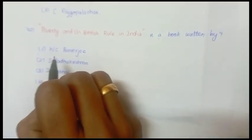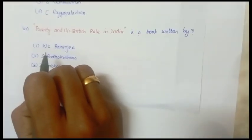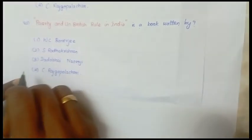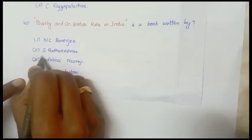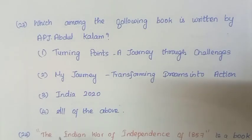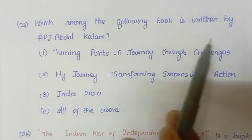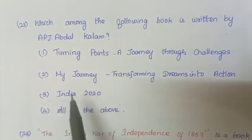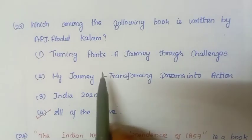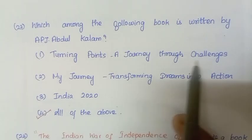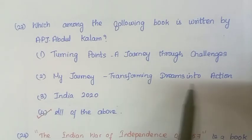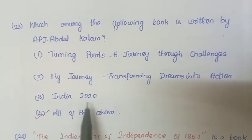Next question: Poverty and Un-British Rule in India is a book written by Dadabhai Naoroji. Next question: Which among the following books is written by A.P.J. Abdul Kalam? Answer is all of the above — Turning Points, A Journey Through Challenges, My Journey: Transforming Dreams into Actions, India 2020.